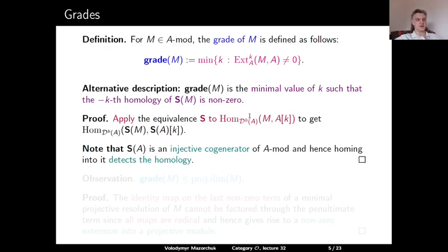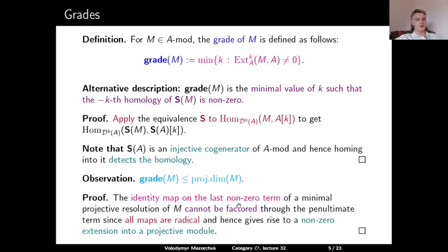A small observation: the grade of M is bounded by the projective dimension of M. Indeed, the identity map on the last non-zero term of a minimal projective resolution of M cannot be factored through the penultimate term, because all maps in a minimal projective resolution are radical maps. Therefore, this identity map gives rise to a non-zero extension from M into the projective module, and the degree of this extension is exactly the projective dimension of M. Note that here we use that A has finite global dimension.